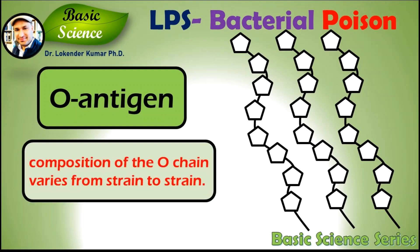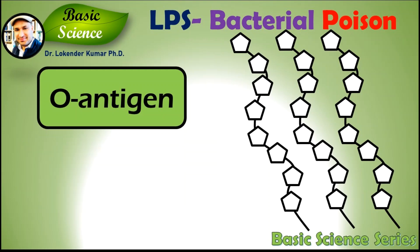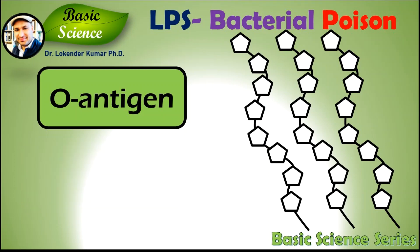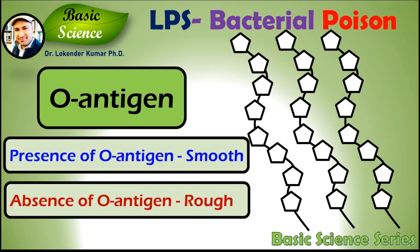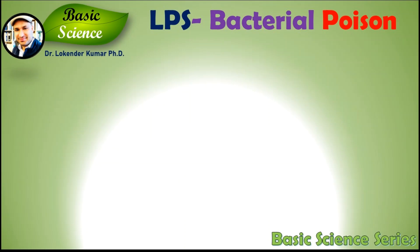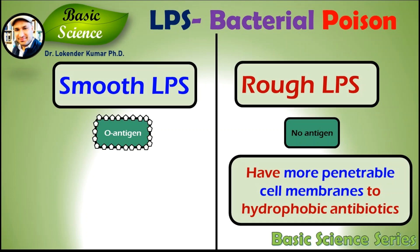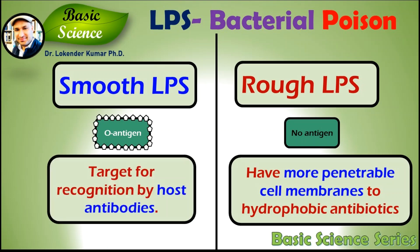The composition of the O chain varies from strain to strain. For example, there are over 160 different O antigen structures produced by different E. coli strains. The presence or absence of O chains determines whether the LPS is considered rough or smooth. Full-length O chains would render the LPS smooth, whereas the absence or reduction of O chains would make the LPS rough. Bacteria with rough LPS usually have more penetrable cell membranes to hydrophobic antibiotics, since rough LPS is more hydrophobic. In smooth LPS, the O antigen is exposed on the very outer surface of the bacterial cell and, as a consequence, is a suitable target for recognition by host antibodies.